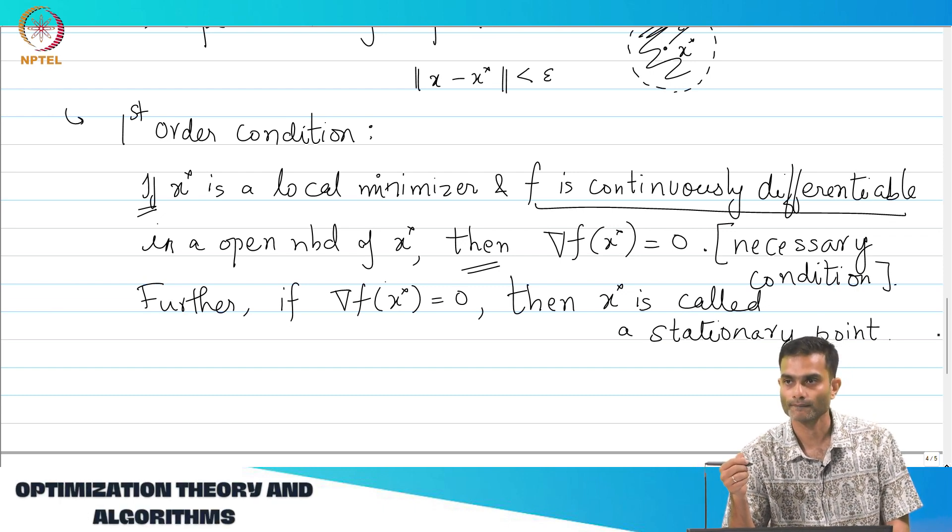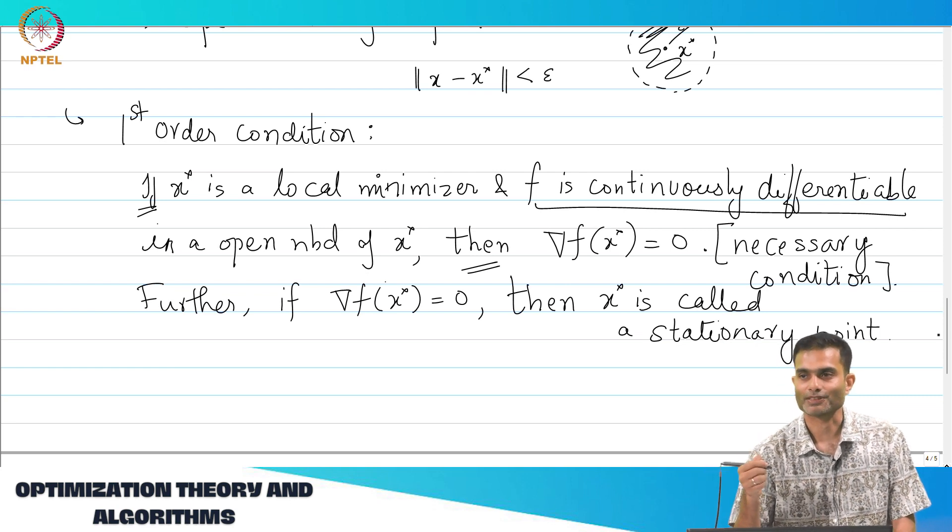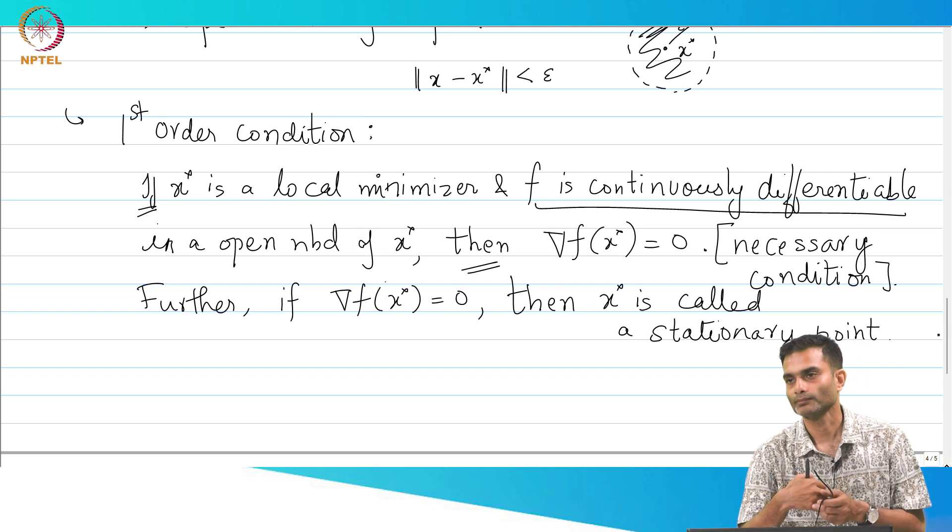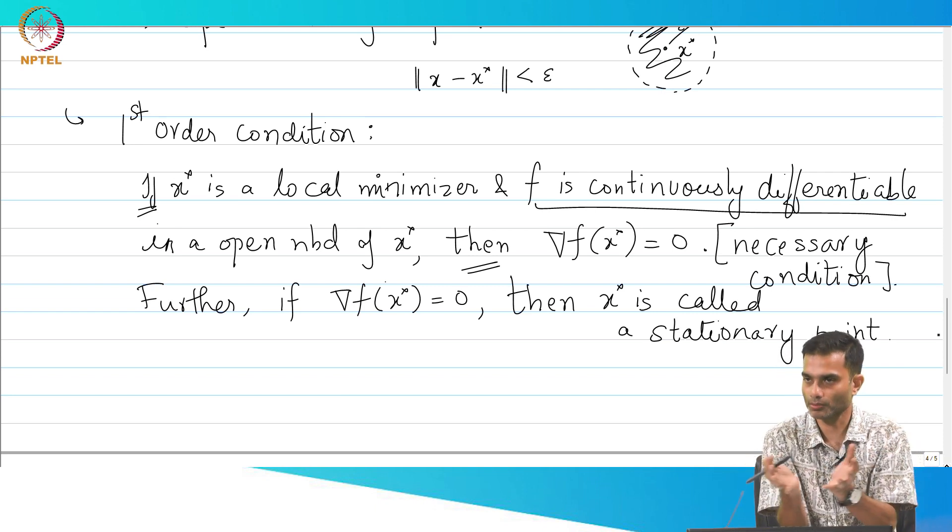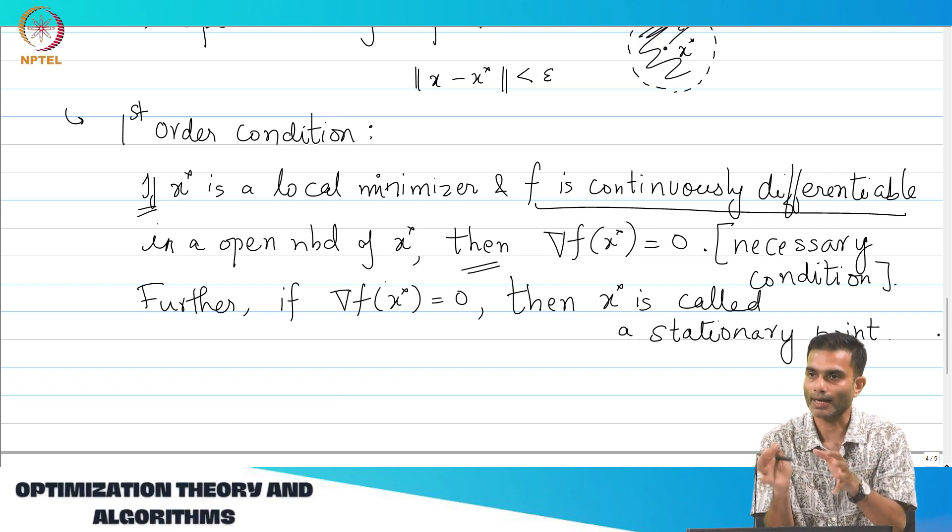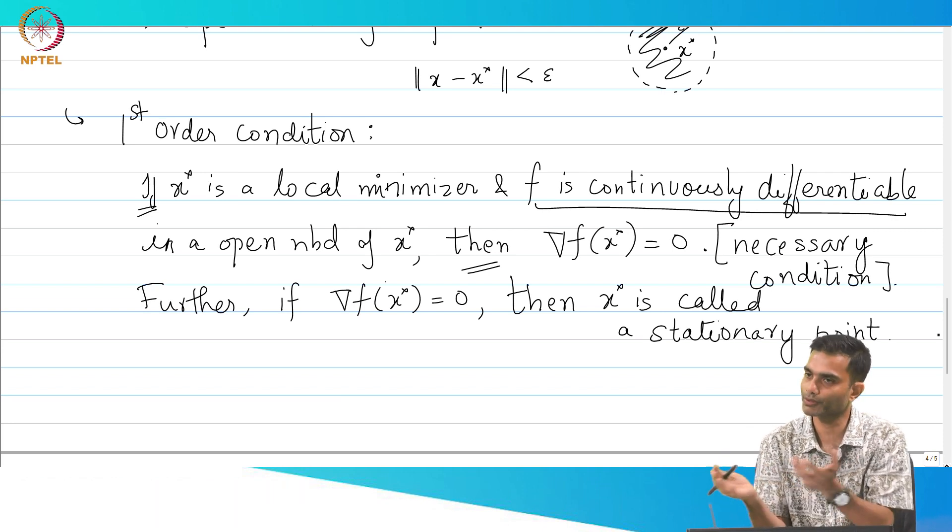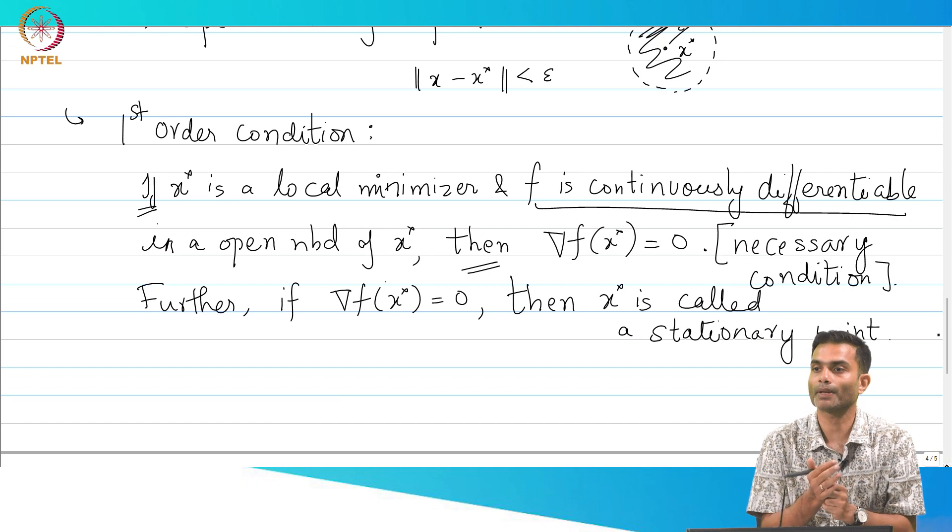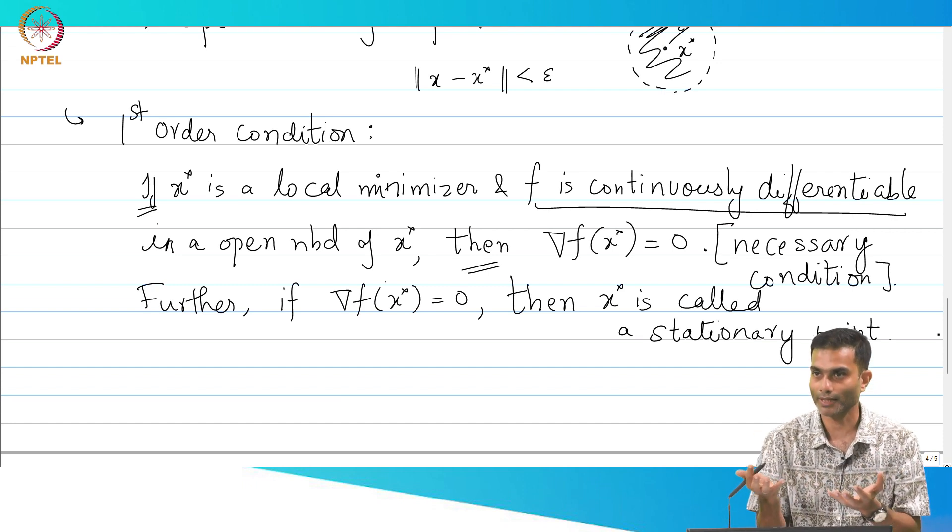It is not specified. So, within whatever radius you specify which is nonzero, that function should be continuously differentiable, and within that radius if you find grad f(x*) equal to 0 you are fine. Now, it may happen that within this neighborhood you do not find any point where grad f(x*) is 0.